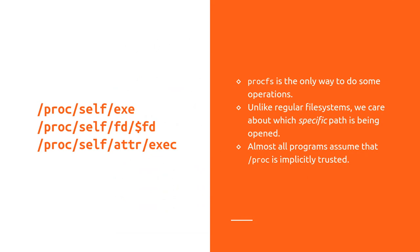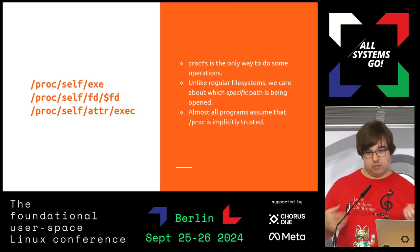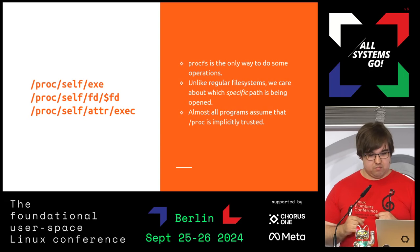The other thing we have — and this is more specialized — is that in container runtimes in particular, we have to deal with procfs a lot. ProcFS is a little annoying, because unlike operating on a root filesystem where the main thing you're worried about is opening files outside the root directory, with ProcFS you need to open a very specific file. A lot of operations can only be done through ProcFS — you can only set AppArmor labels and SELinux labels for a process through ProcFS. Magic links like /proc/self/exe and /proc/self/fd are the only real way to operate on them. If you open the wrong file, you end up doing the wrong thing.